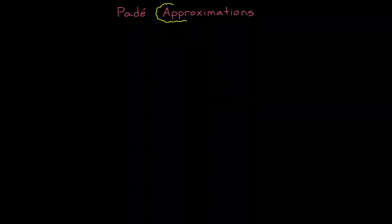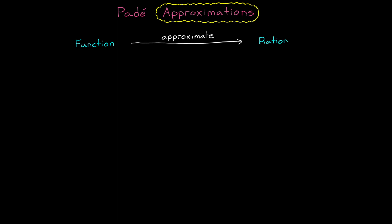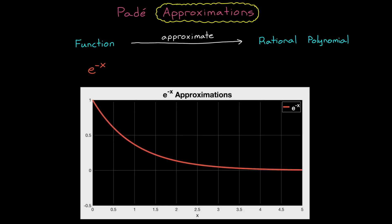As the name suggests, a Padé approximation is an approximation of a function, and the idea is that we take any function and approximate it as a rational polynomial. For example, let's take the function e to the minus x, which I've plotted here. The first order over first order Padé approximation for e to the minus x is 1 minus 1 half x over 1 plus 1 half x. And if I plot this, you can see that it approximates e to the minus x pretty well, up to about x equals 0.5 or so.